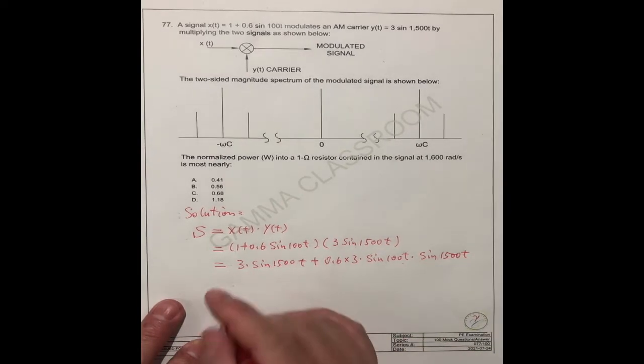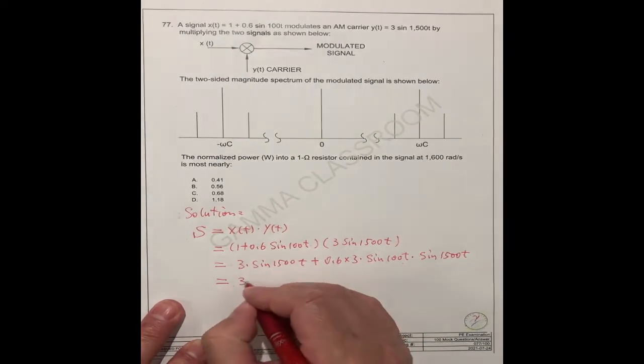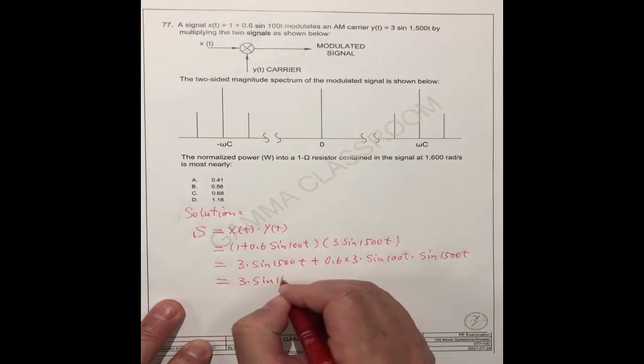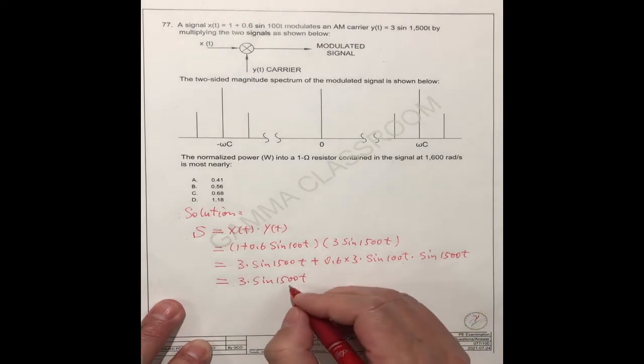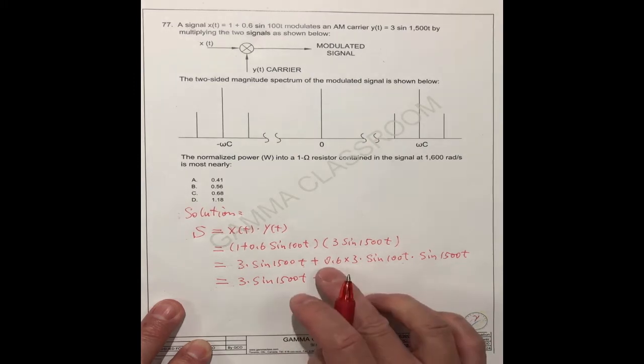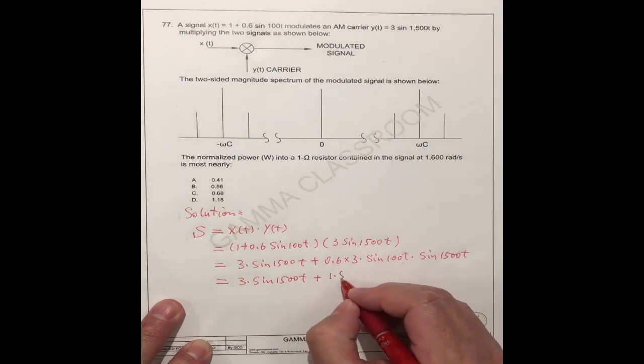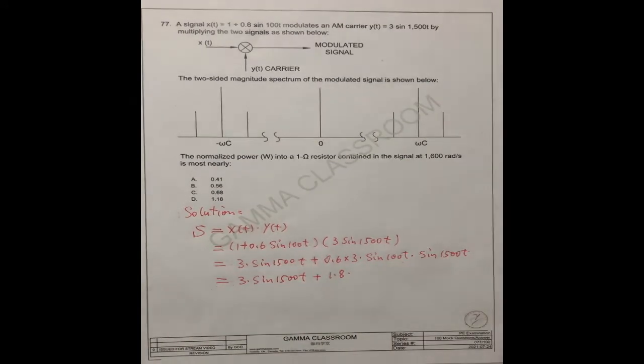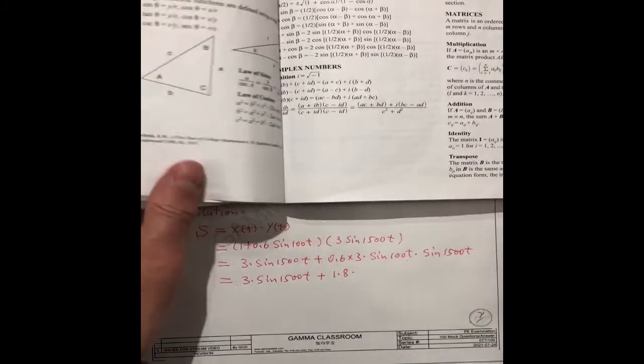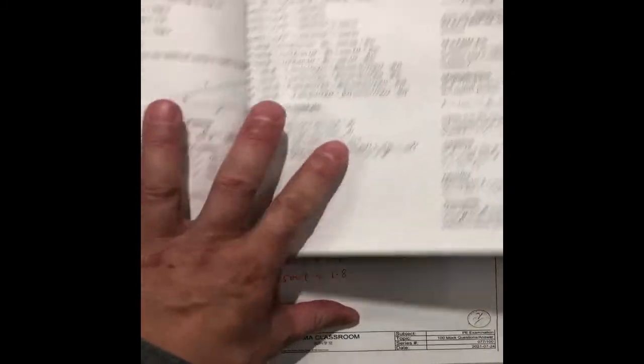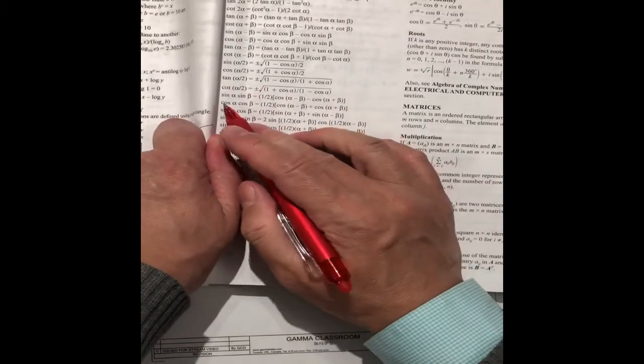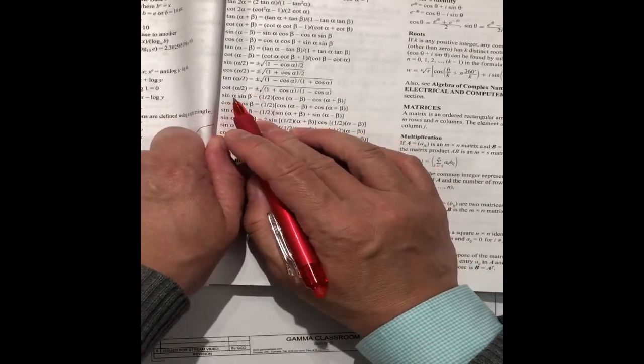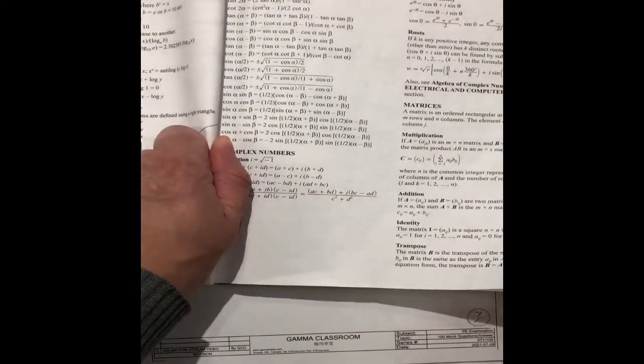So this is no change. We can write down here 1.8. How about this one and this one? So we can check the formula in the math section in the FE handbook. You see this one, sin(alpha) on page 23.